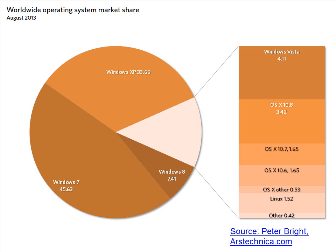This is an illustration of the Worldwide Operating System Market Share. As you can see, the most popular operating system is Windows 7, followed by Windows XP. Windows 8 only has 7.41%, but remember this is worldwide. Then there is OS X at 3.42%.